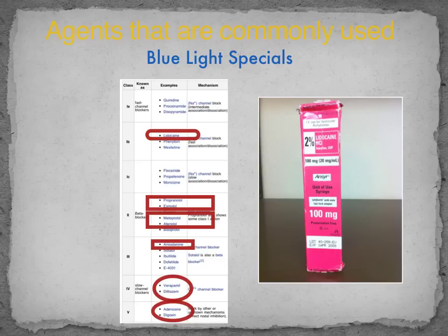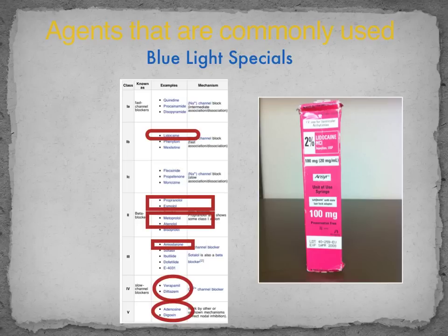For this pharmacology class, the medications to focus on — the blue light specials — are: lidocaine from Class 1B; propranolol, esmolol, metoprolol, and atenolol from Class 2 beta blockers; amiodarone from Class 3; verapamil and diltiazem from Class 4; and adenosine and digoxin from Class 5.